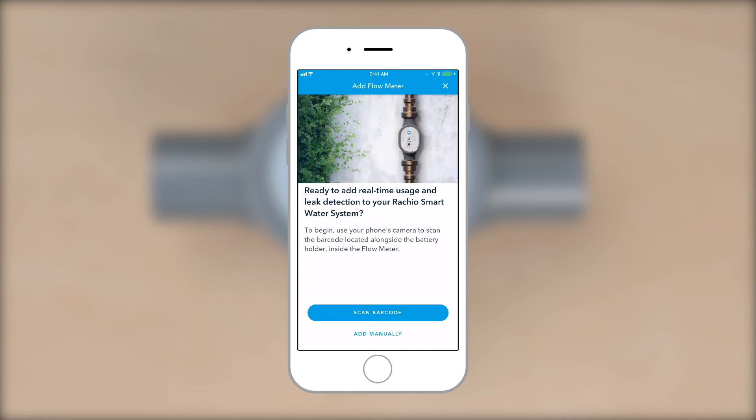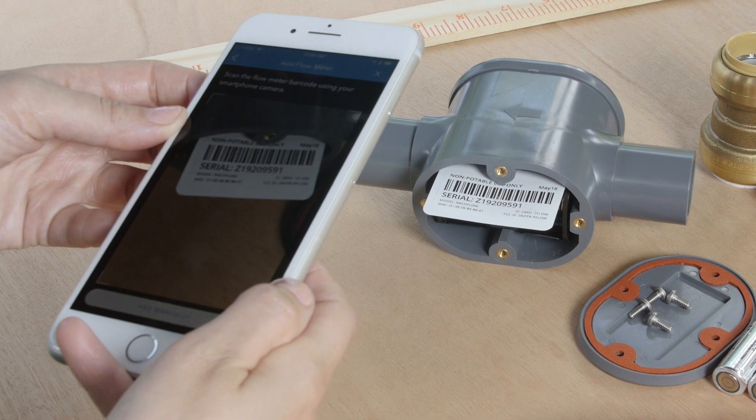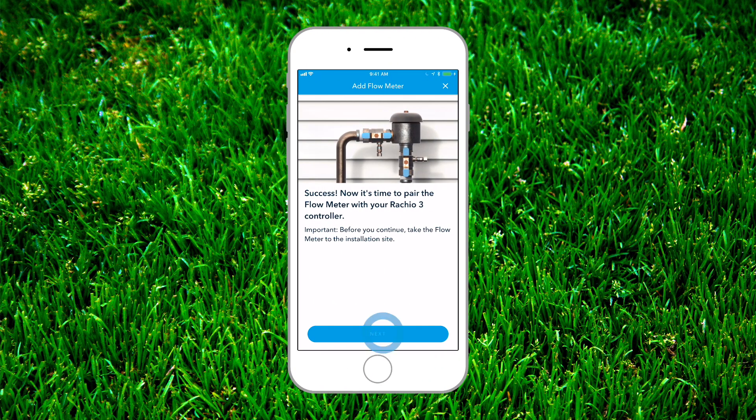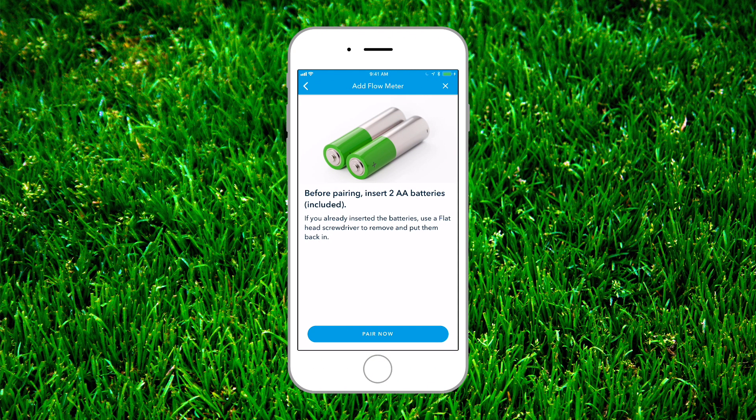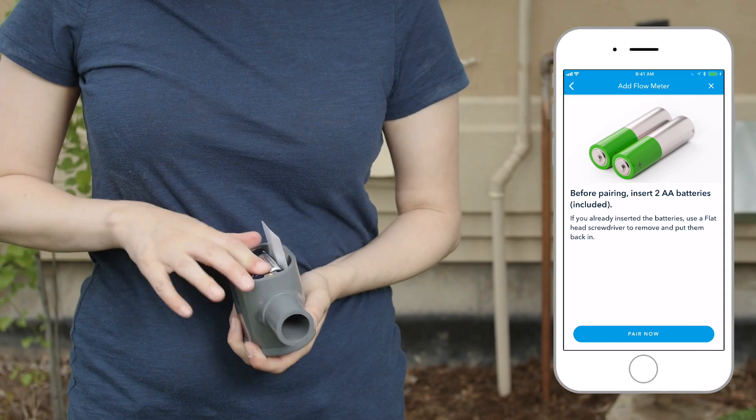The app will walk you through the pairing process. You'll scan the barcode on the meter, then head to the installation site. The app will prompt you to install the batteries, then the meter will pair with your controller.